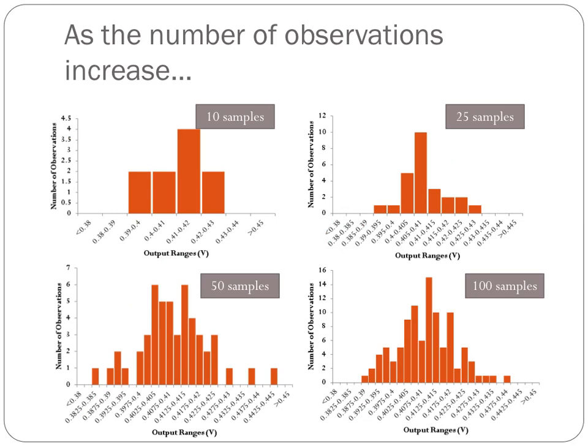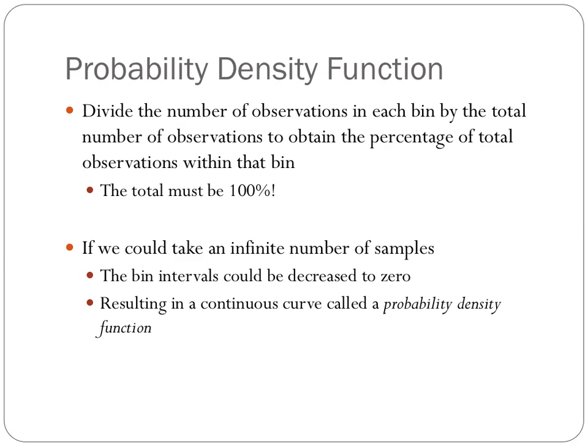As we take a greater number of samples, we get some measurements that fall further away from the mean, but we also get a larger number of observations that fall near the mean value. As we look at 100 samples and beyond, we start to get a distribution that looks something like the bell curve that you're familiar with. The bell curve, or the Gaussian distribution, is a probability density function.